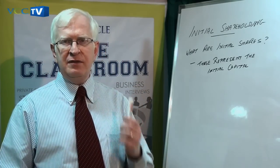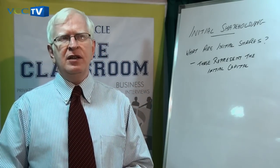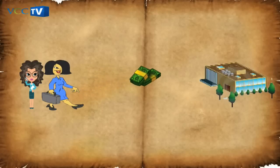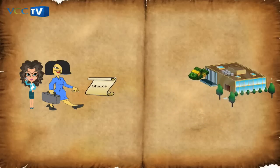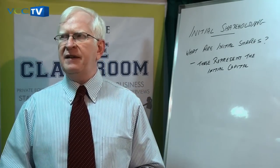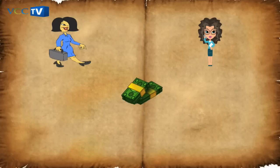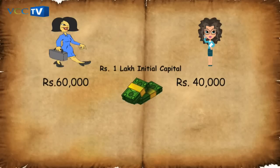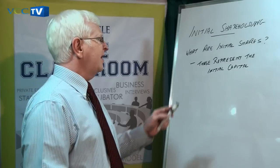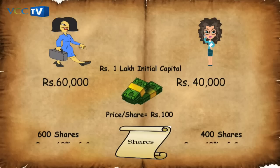Once the company is born and the certificate of incorporation is issued, these promoters need to give this one lakh of rupees to the company — that is the initial capital. In return for this, the company issues shares, which are nothing but a right of ownership in the company. Say they agreed to put in 60,000 and 40,000 respectively: one would get 600 shares of 100 rupees each and the other would get 400 shares, for a total of 1,000 shares representing one lakh rupees. This represents ownership of 60% and 40%.